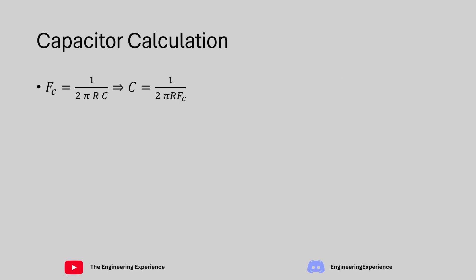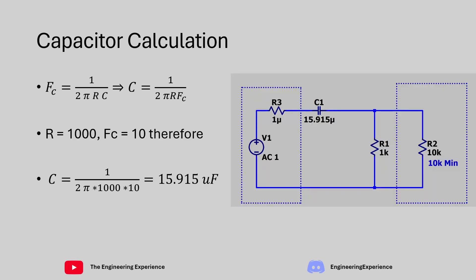To calculate the capacitor value we can use this cutoff frequency equation which is fc = 1 over 2πRC. The only unknown is C so we need to get C by itself. We previously fixed the resistance to 1 kilo ohms and the cutoff frequency is 10 hertz. So the equation for the capacitance becomes C = 1 over 2π times 1000 ohms times 10 hertz which gives us a capacitance value of 15.915 microfarads.